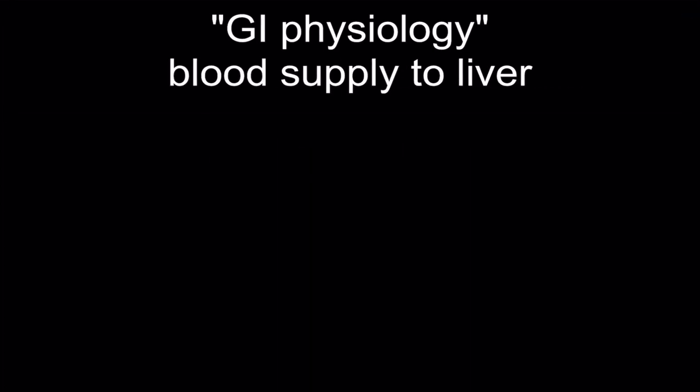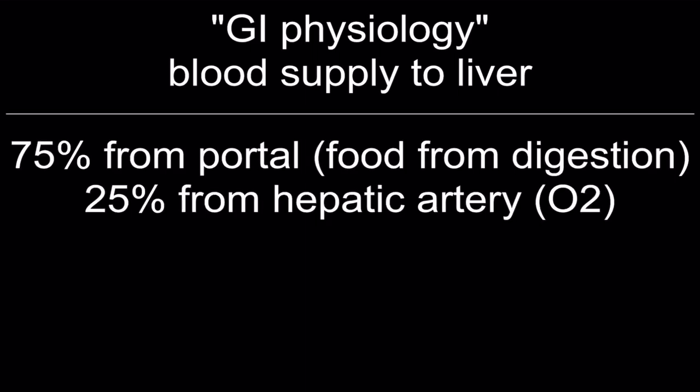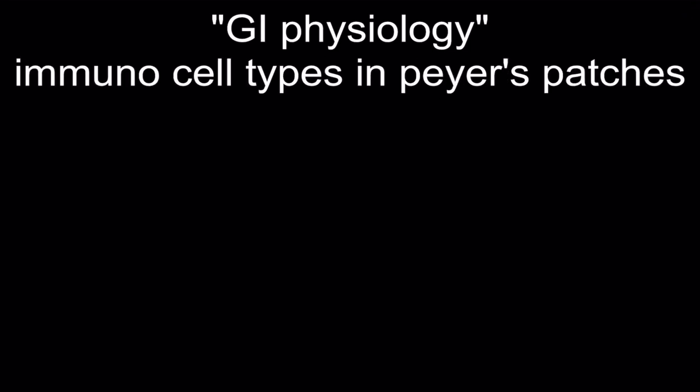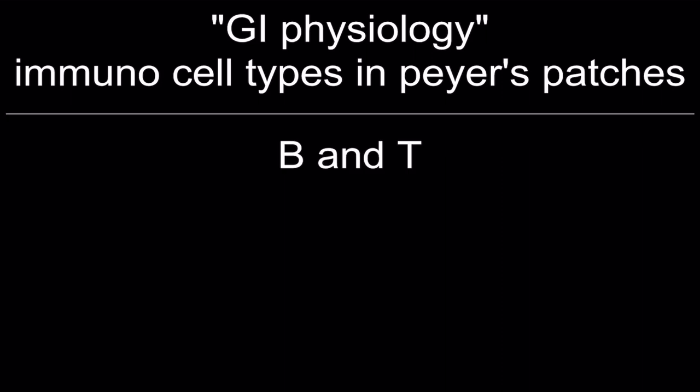Blood supply to the liver: 75% from the portal vein (for food from digestion) and 25% from the hepatic artery (for oxygen). Peyer's patches: nodules of lymphoid tissue in the small bowel that sample luminal antigens. Immune cell types in Peyer's patches: B and T cells.